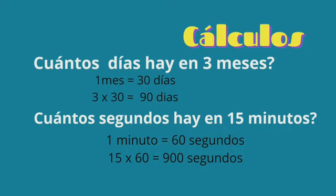Siguiente ejercicio: ¿Cuántos segundos hay en quince minutos? Nuestra tabla de equivalencia nos muestra que en un minuto hay sesenta segundos. Por consiguiente, multiplicamos quince por sesenta. Eso nos da un total de novecientos segundos. Es decir, que en quince minutos hay novecientos segundos.